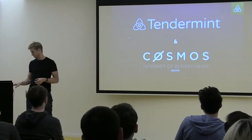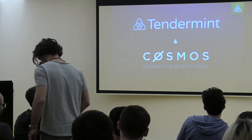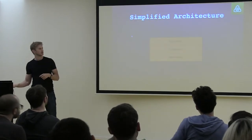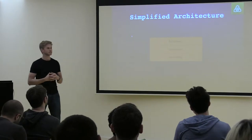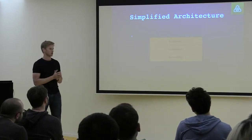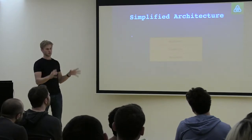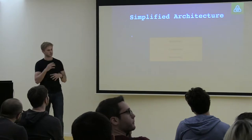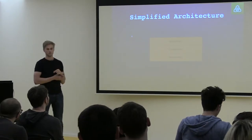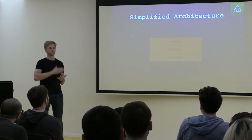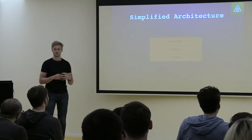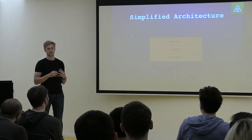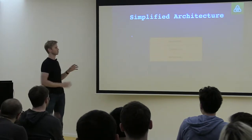There are two projects to talk about: Tendermint and Cosmos. Tendermint is a much older project and comes from a different approach to building blockchain applications. Traditionally, blockchain applications have been built with one software codebase that includes everything: the peer-to-peer networking, sending around blocks and data, the mempool, the consensus rules for producing the next block, and finally the application. With Bitcoin, it's one massive codebase — very hard to change because everything is interwoven, not clearly separated. Even Ethereum is still one codebase.